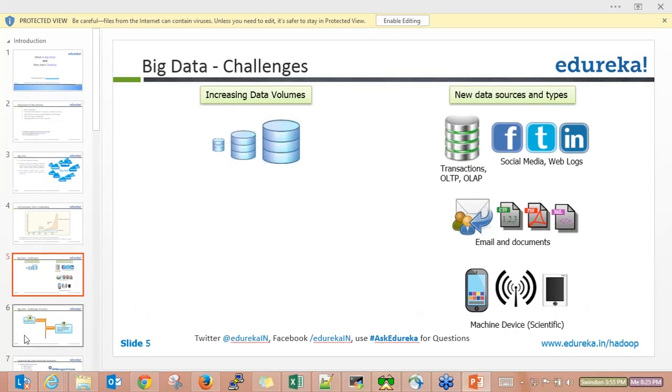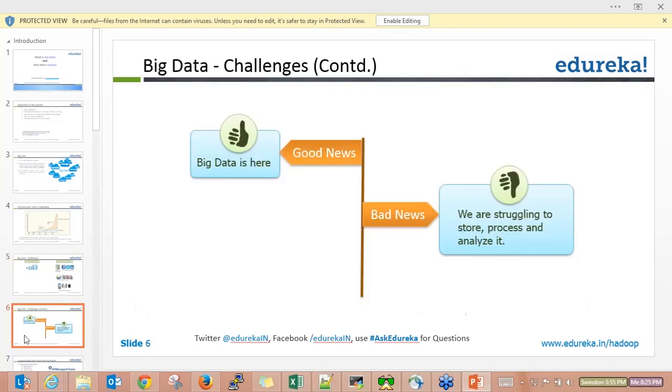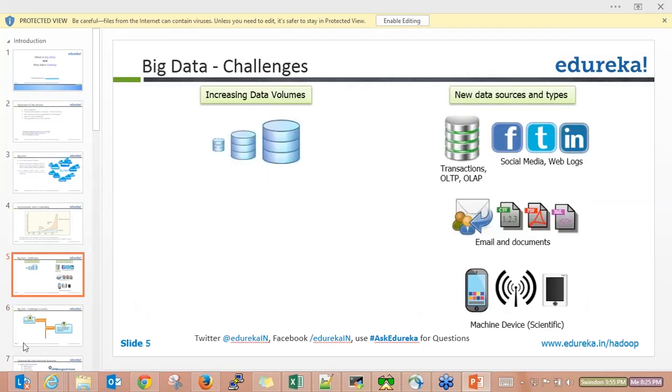When we're talking about Big Data, we're getting data from different sources - transaction data, OLTP systems like SAP or ERP systems, data from social media like Facebook, and other web interfaces.